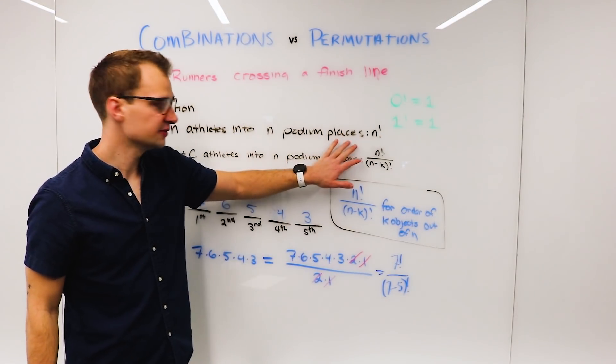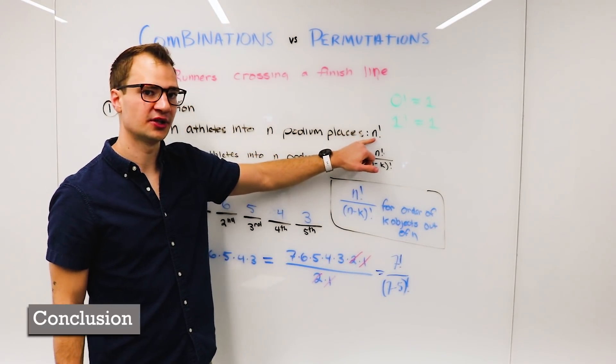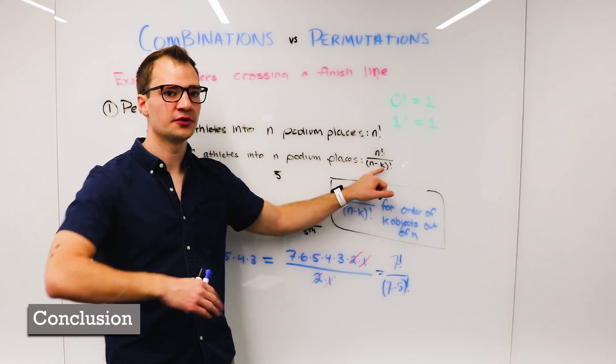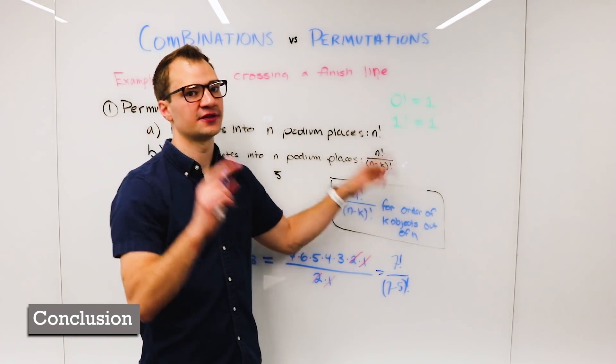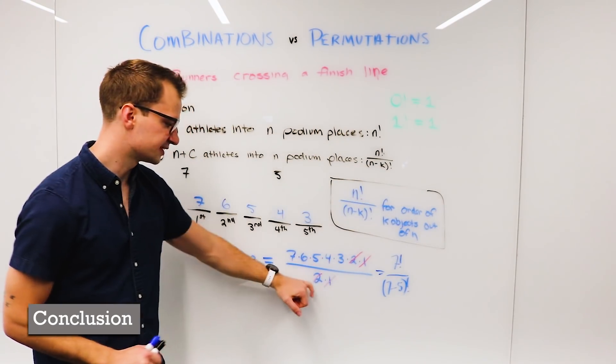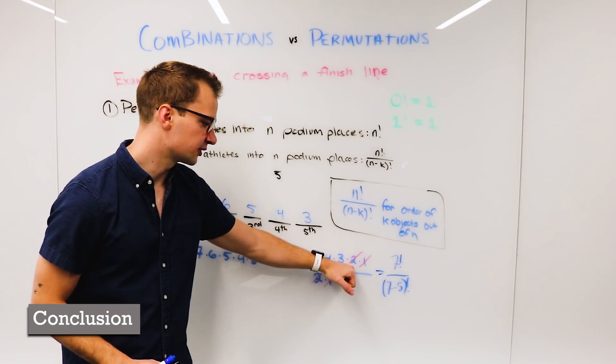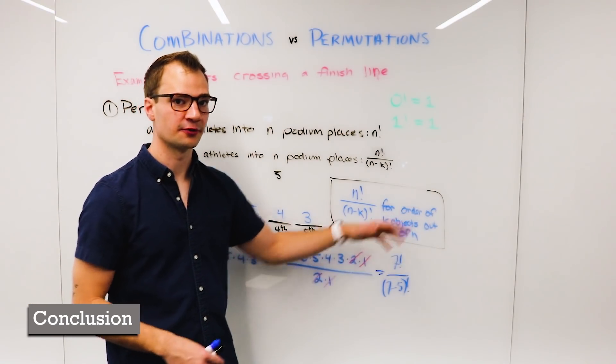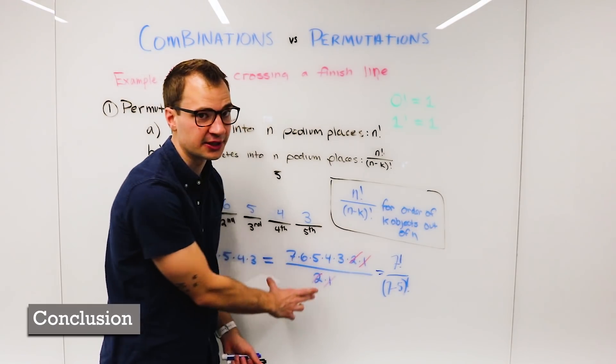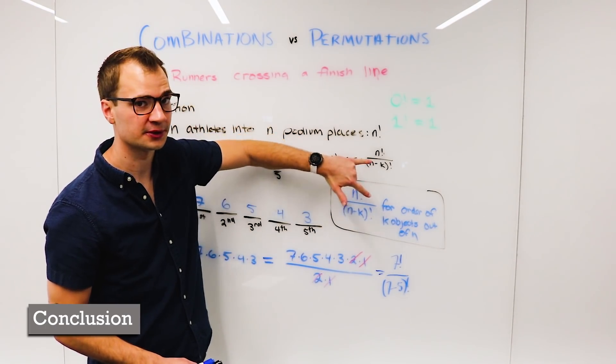So to remember this difference, we know that our generic permutation formula is just n factorial. And now we want to divide out the remaining. We want to divide out everything that we don't care about. And that's all we're doing with this n minus k factorial, right? It's the two times the one so that we can cross out on top the remaining portion of it. And we're only left with the k objects that we care about. That's the only difference between these two formulas.